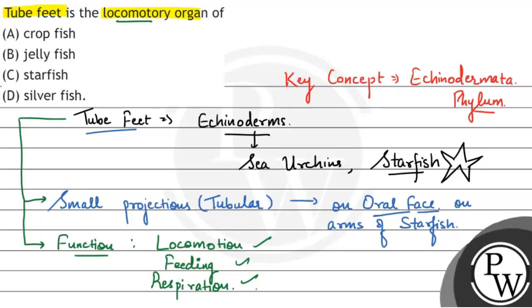What should we answer? Tube feet is locomotory organ of starfish. Starfish is locomotory organ because starfish is a member of echinoderm. That's why the correct answer is starfish.